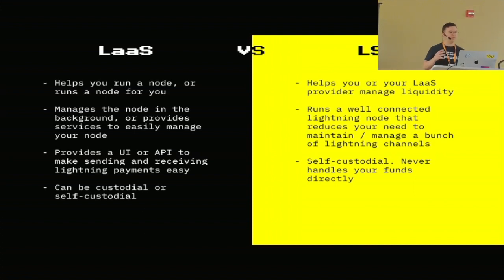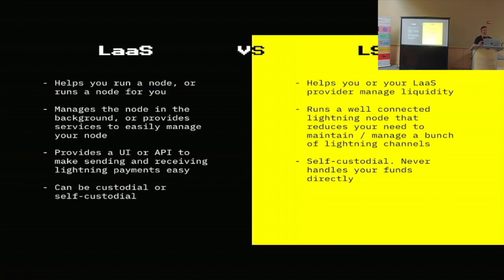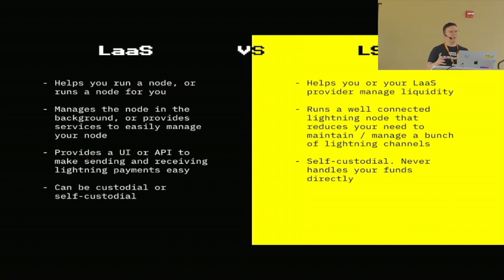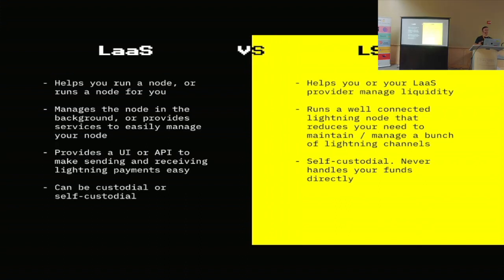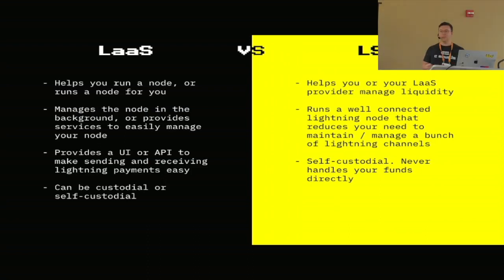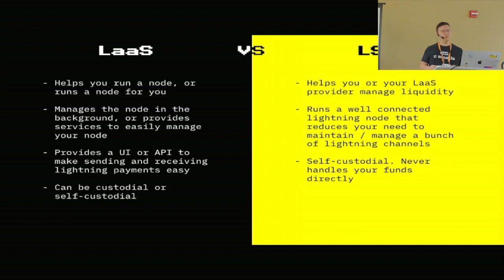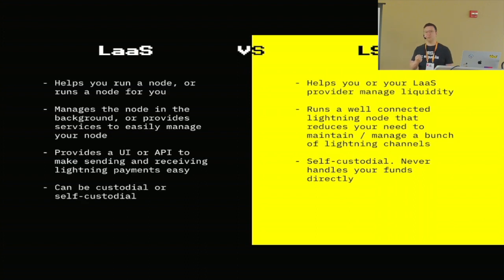Lightning-as-a-Service is a company or service that helps you run a node or runs a node for you. Usually they're managing the node in the background or giving you some service or app that lets you very easily run a node. Typically a Lightning service company will have a nice UI or APIs that let you get onto Lightning really easily. You can see Lightning service being custodial or self-custodial — there are examples of both. Whereas an LSP — what we're offering — is more focused on liquidity, and can help either you or a Lightning service provider manage liquidity.